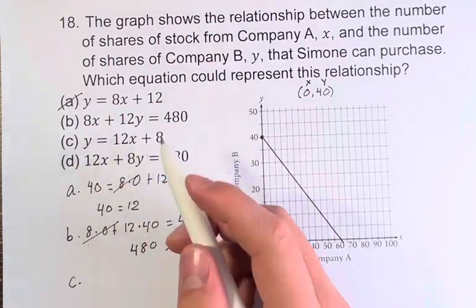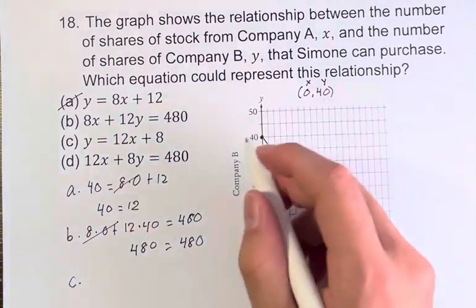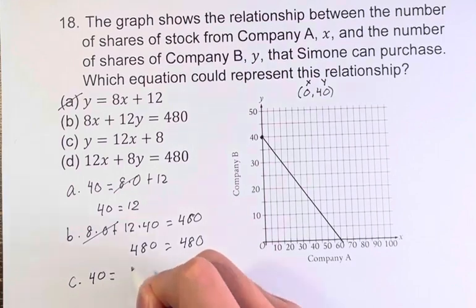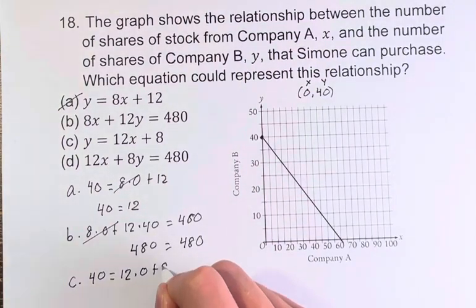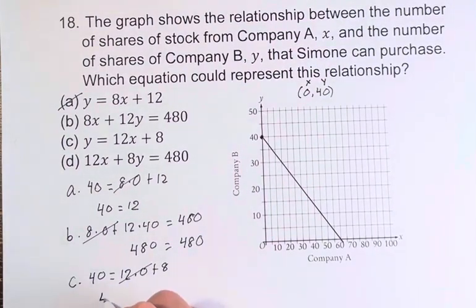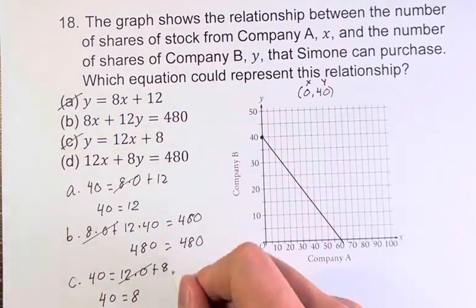For C, y is equal to 12x plus 8. This gives us 40 is equal to 12 times 0 plus 8. The 0 disappears and we're left with 40 is equal to 8. Therefore we know it's not C.